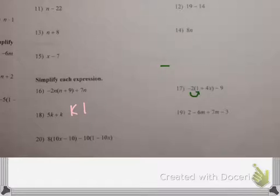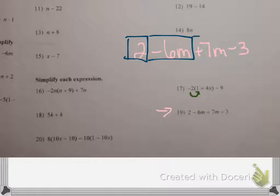Alright, let's look at 19. Again, there's no distributive property to do, so I'm just going to rewrite this a little bigger. 2 minus 6m plus 7m minus 3. And there are four terms in this expression. These two can go together, because they both have an m. And a negative 6 and a positive 7 is 1m.